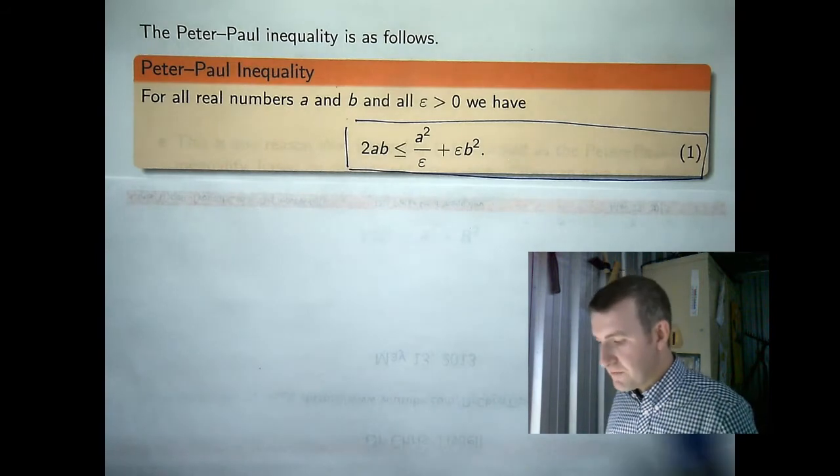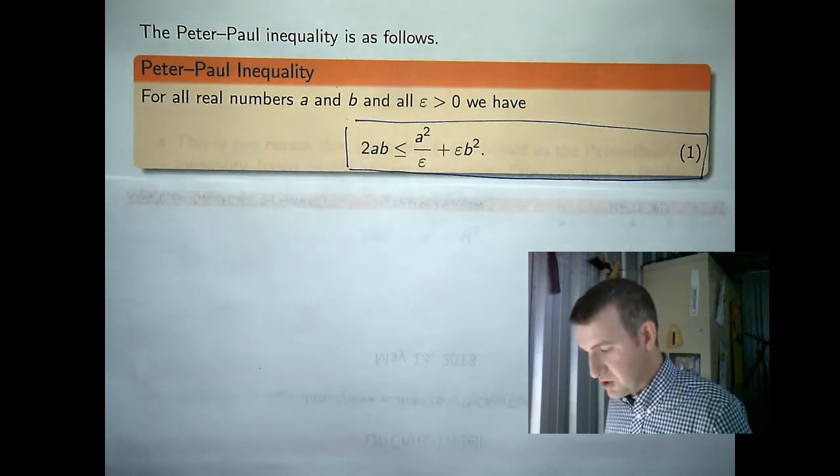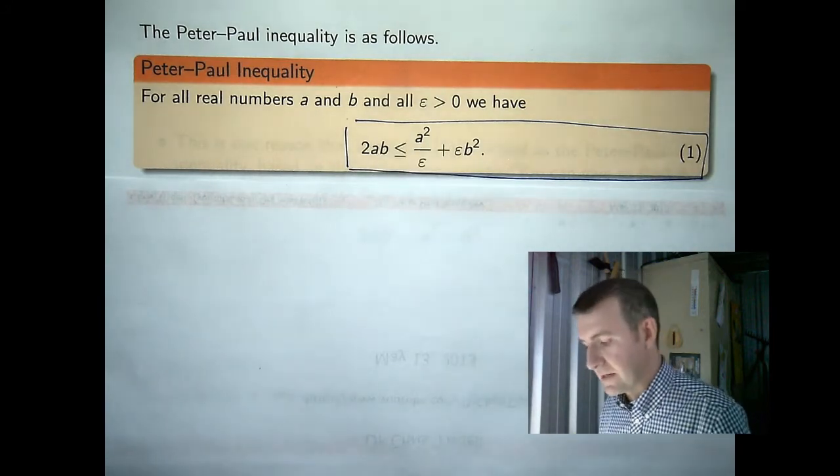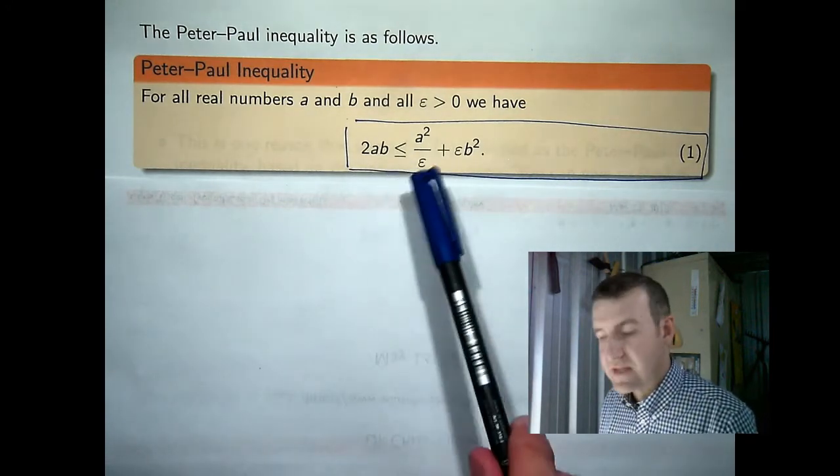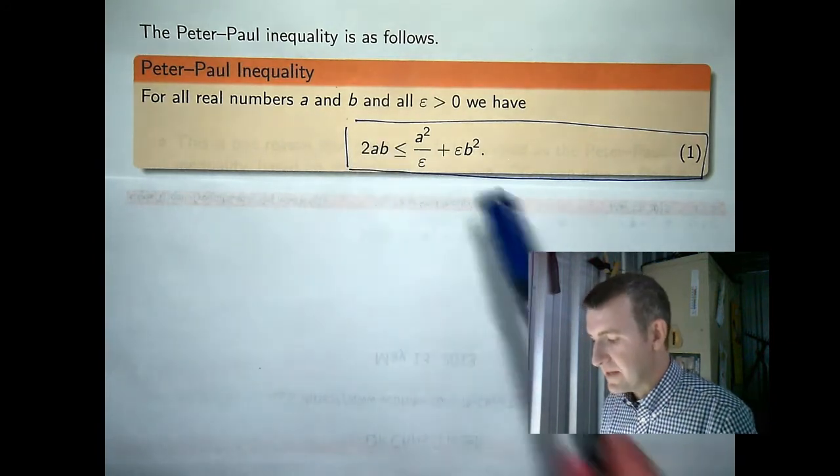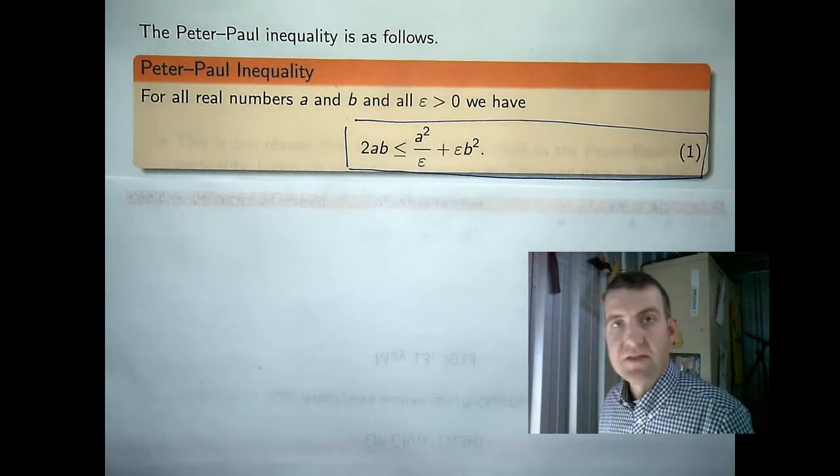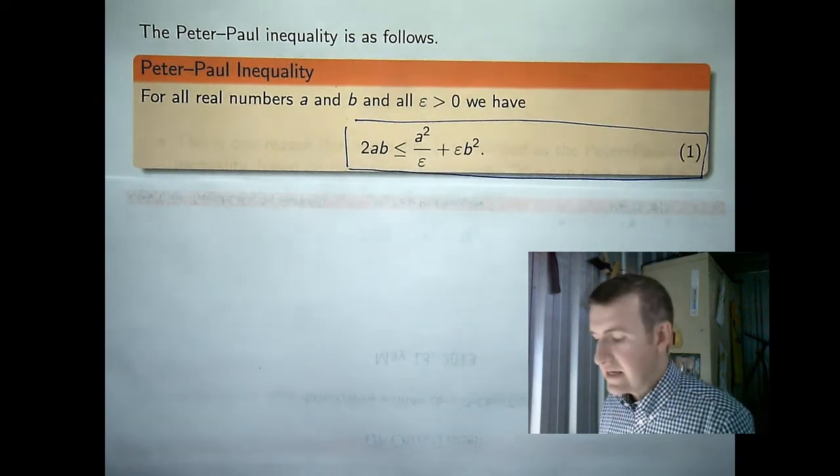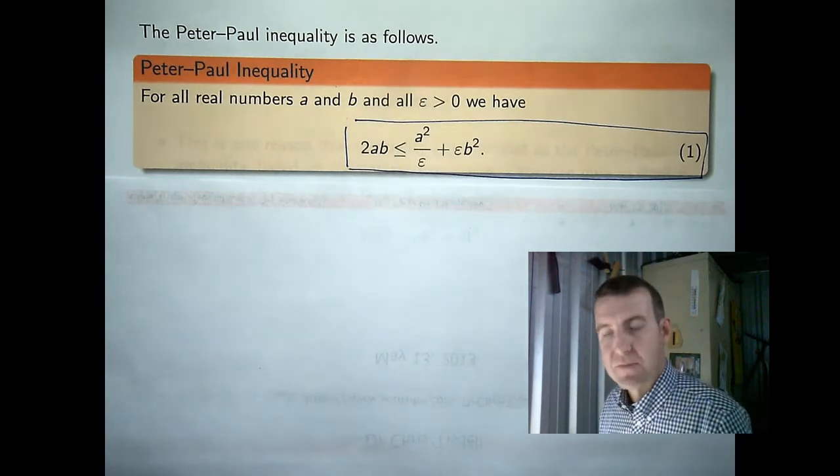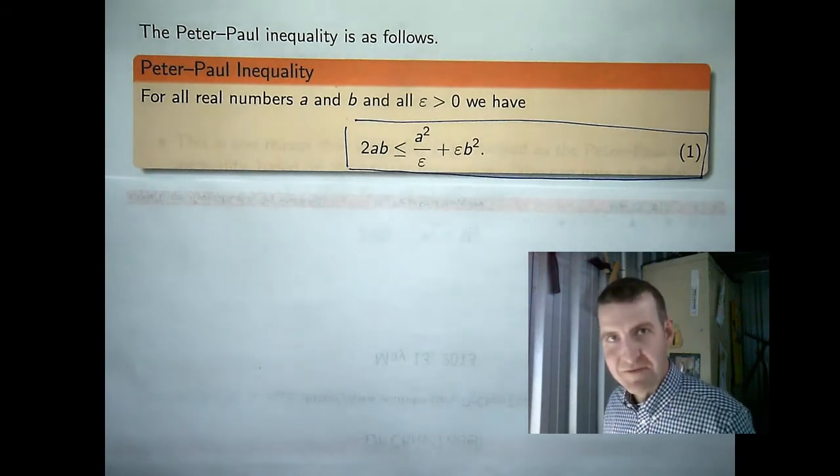Now first of all, before we show how this inequality comes about, let's try to deconstruct the inequality. What we're doing is essentially estimating the product 2 times a times b in terms of this right-hand side.